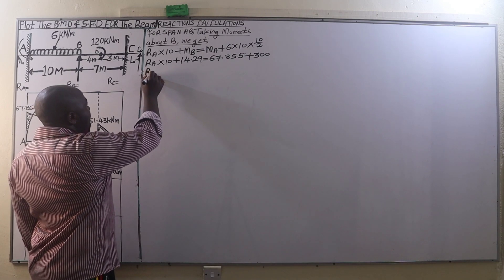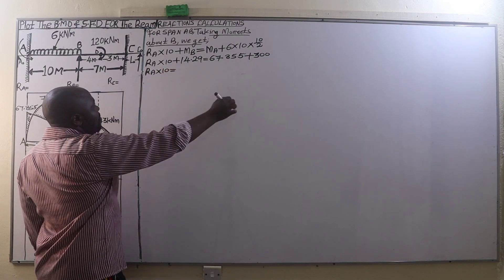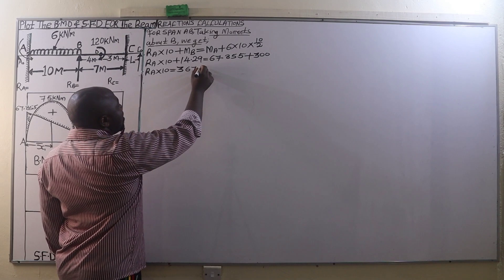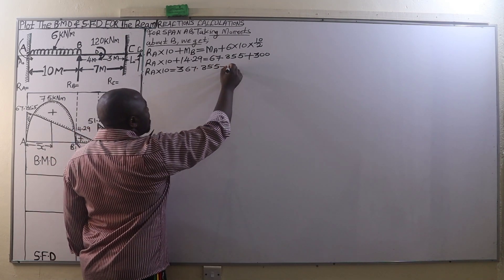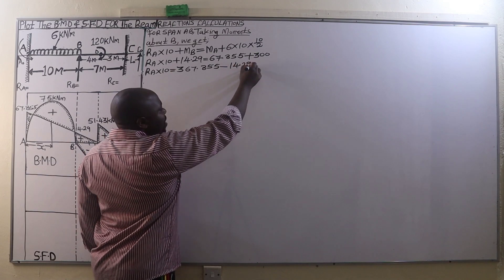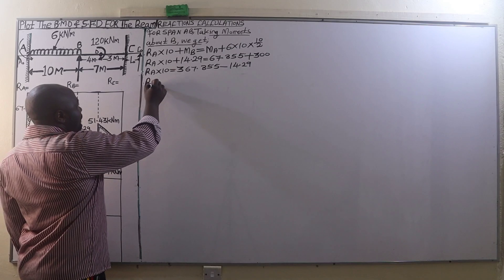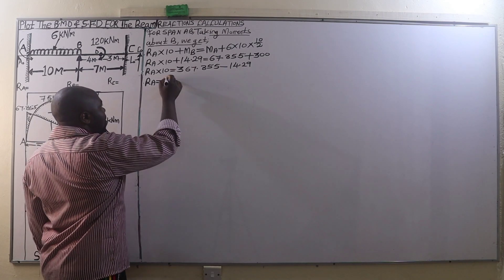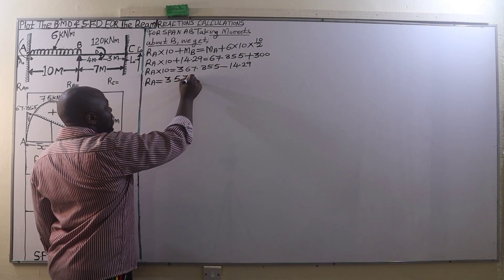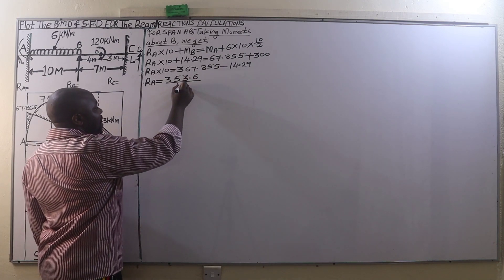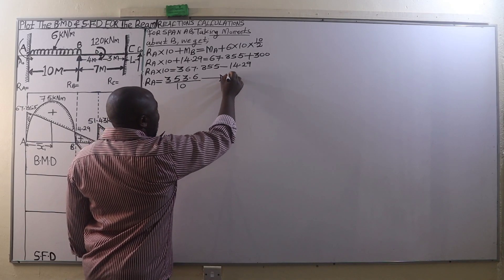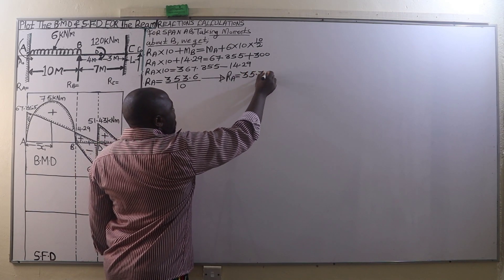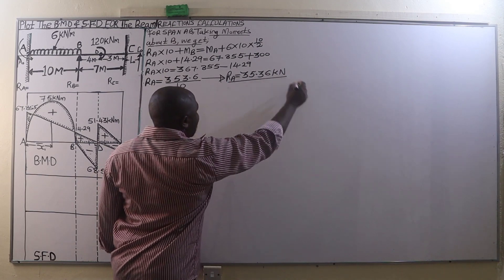This gives us RA times 10, which is going to be equal to 367.855 minus 14.29, bringing 14.29 to the other side of the equal sign. So RA equals 367.855 minus 14.29, that is 353.6. Then we divide by 10, and that gives us a reaction at A of 35.36 kN.